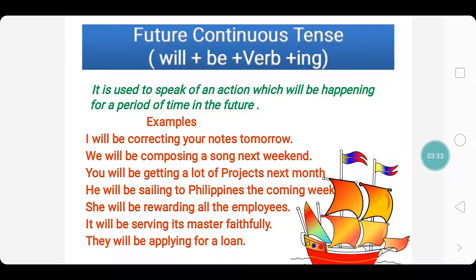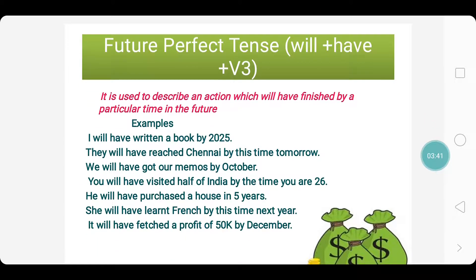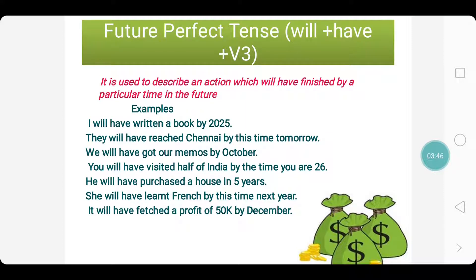All these actions are going to continue — they are not going to stop at just a particular moment; they are going to continue for a span of time. Now let us move to Future Perfect Tense. The verb form used here is will plus have plus V3. V3 is the past participle form. When do we use Future Perfect Tense? It is used to describe an action which will have finished by a particular time in the future.